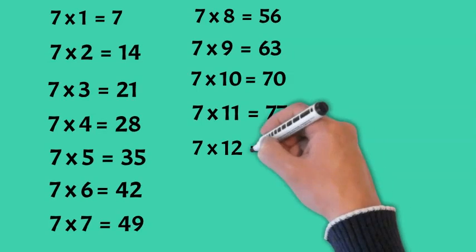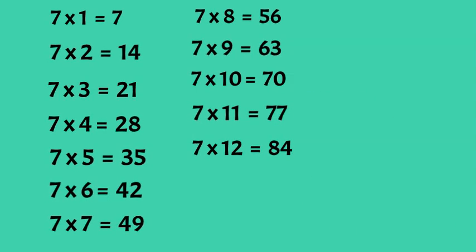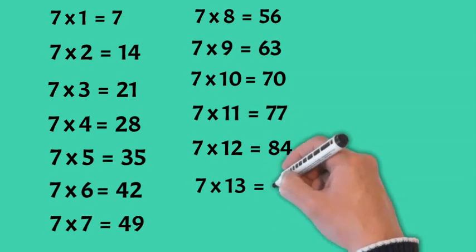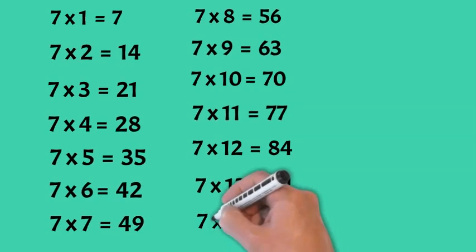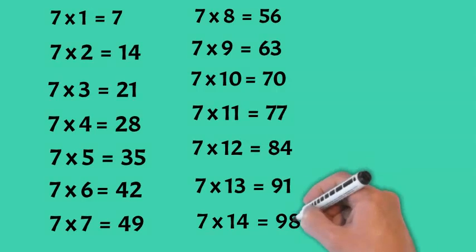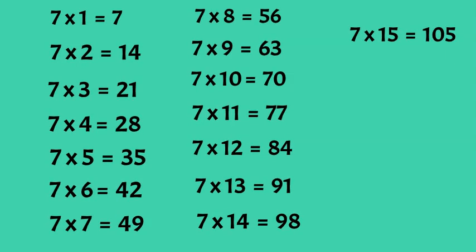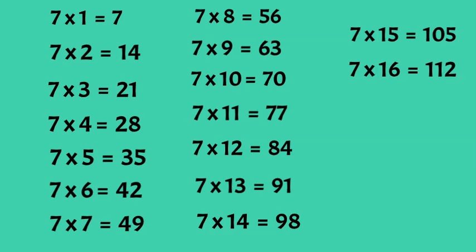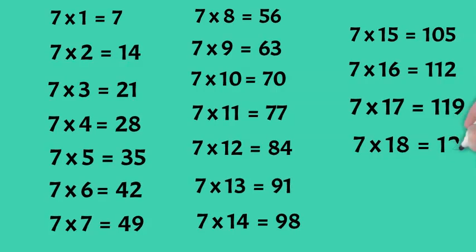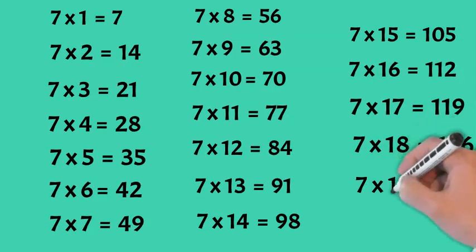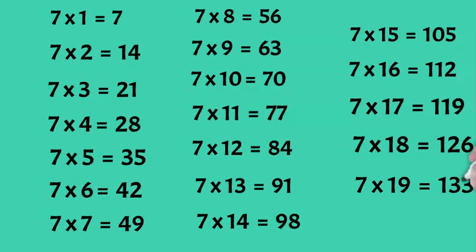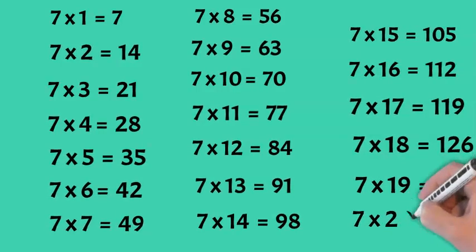Seven times 12 is 84. Seven times 13 is 91. Seven times 14 is 98. Seven times 15 is 105. Seven times 16 is 112. Seven times 17 is 119. Seven times 18 is 126. Seven times 19 is 133. Seven times 20 is 140.